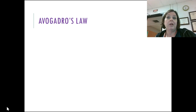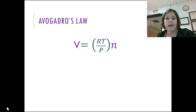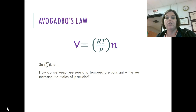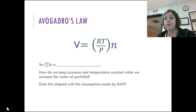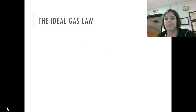Avogadro's Law relates number of moles and volume. Volume equals a constant times the number of moles — that constant is the slope of the line. To keep pressure and temperature constant while increasing the number of moles, the volume must change, which requires a flexible container. This meets the assumptions of kinetic molecular theory: the more particles we put in, the bigger the volume has to be to keep temperature and pressure constant. The ideal gas law simply puts all of that together.